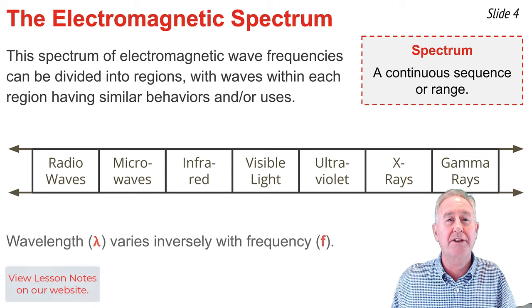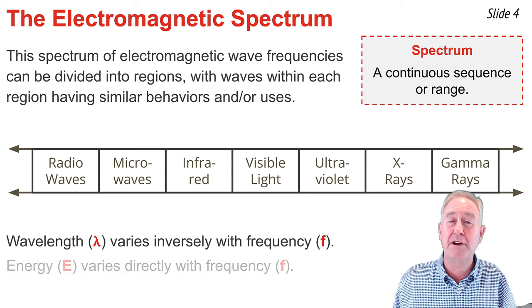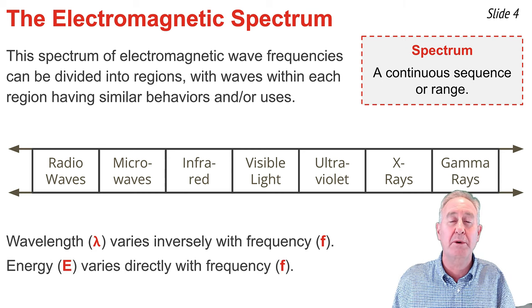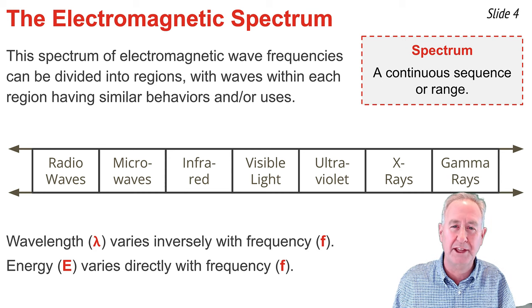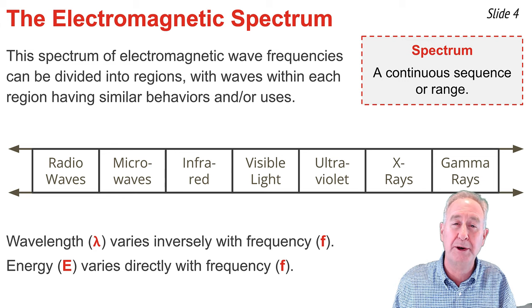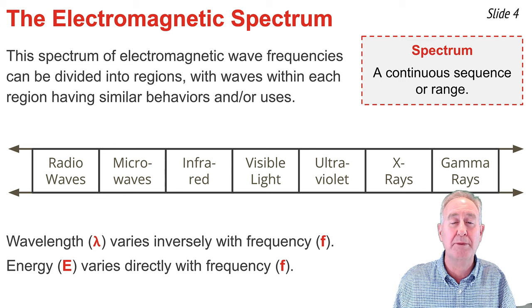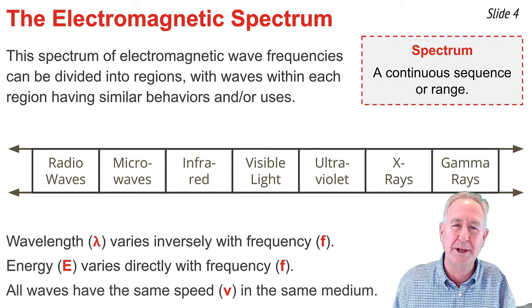The wavelength of an electromagnetic wave varies inversely with frequency, and the energy varies directly with frequency. The speed of an electromagnetic wave is independent of its wavelength and frequency, dependent only upon the material through which the wave is traveling. So EM waves all have the same speed when traveling through the same medium.